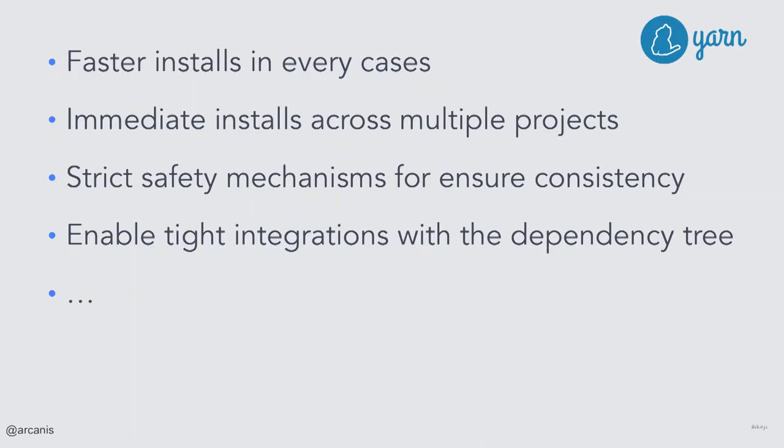This means that when Node has to figure out the location of a package, it just has to look into a few maps without making any filesystem call — everything is done. There is no more of the try-and-repeat process. By doing this, we can reach almost instantaneous installs. More than that, we can now enforce the boundaries between packages, meaning that your applications are more stable when deployed to production. You don't have the risk that suddenly a package doesn't exist, because you would have been notified while developing.